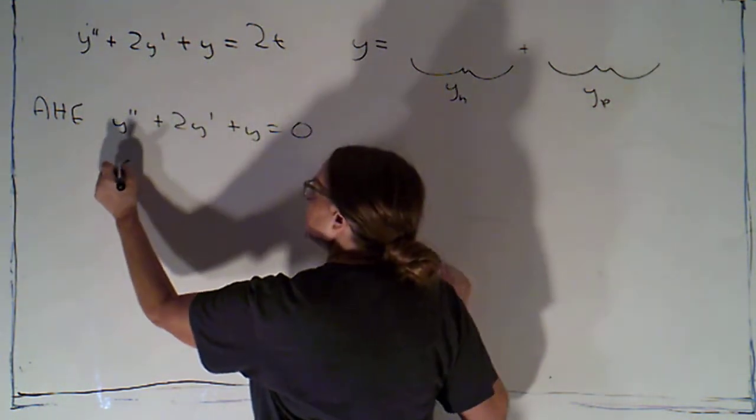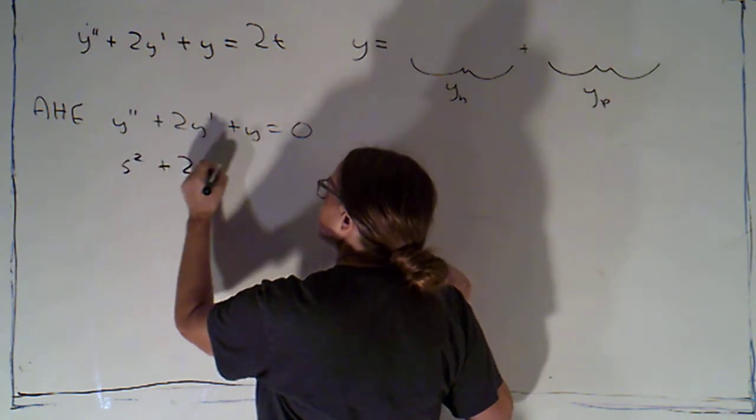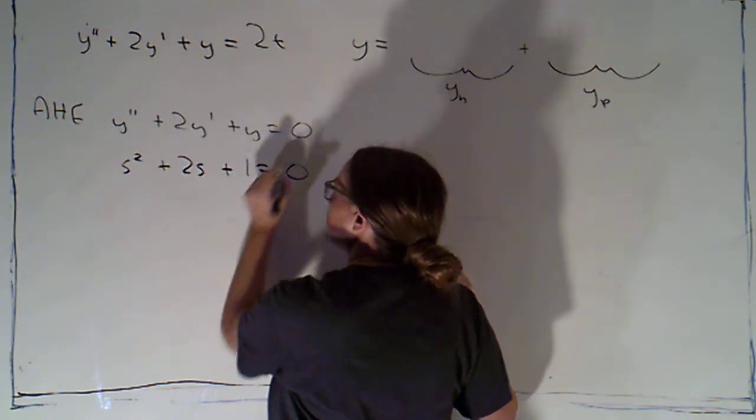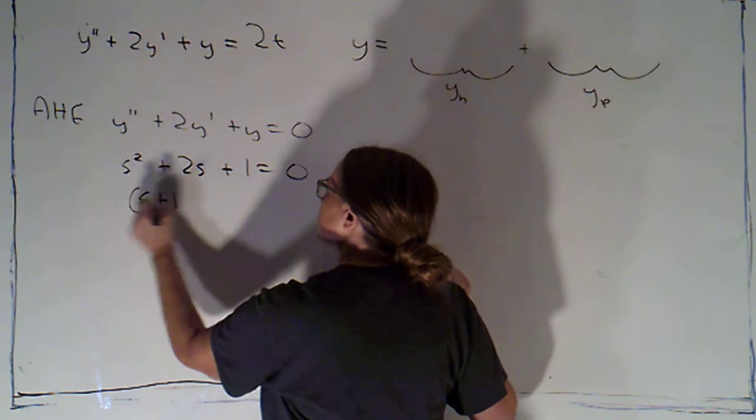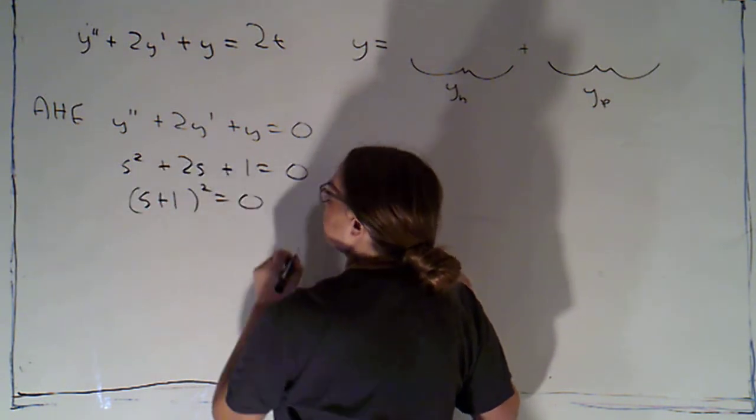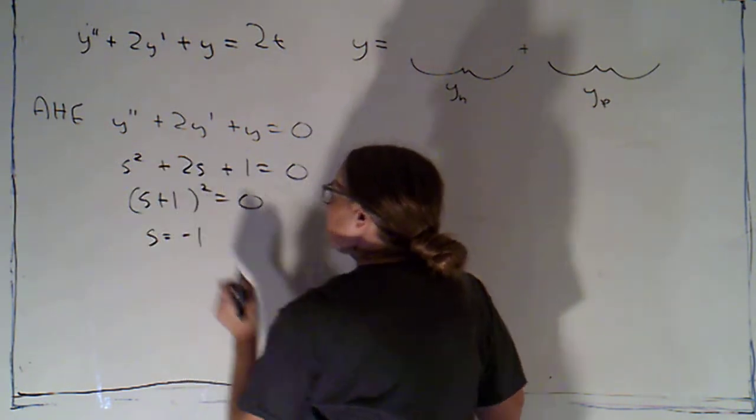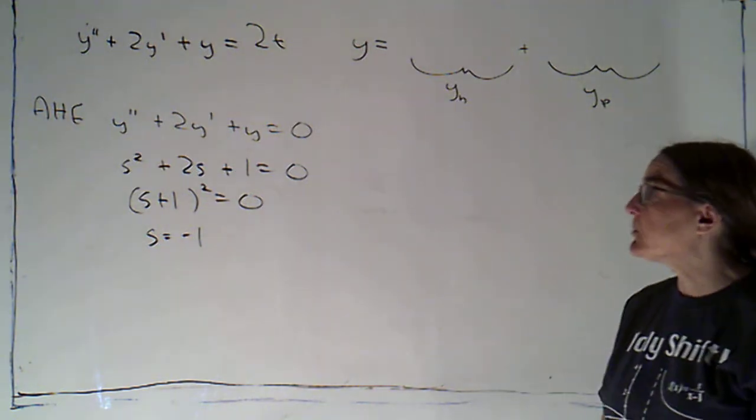So the characteristic equation for that is s squared plus 2s plus 1 equals zero. Notice that's just s plus 1 squared equals zero. So s would equal negative 1 and that's a repeated root.